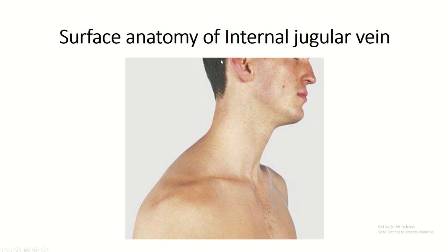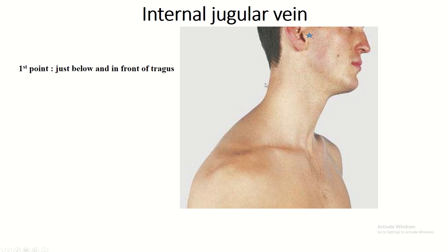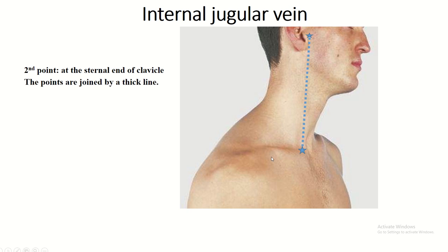Surface anatomy of the internal jugular vein: the first point is just below and in front of the tragus, and the second point is at the sternal end of the clavicle. Join these points with a thick line.